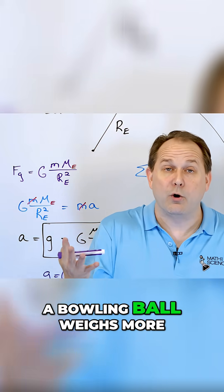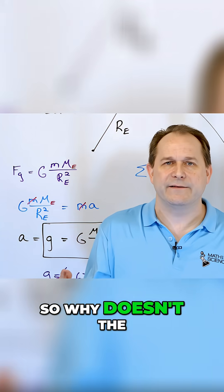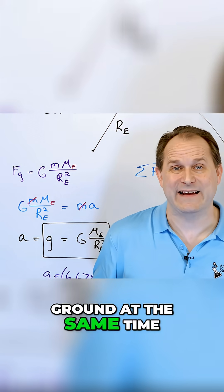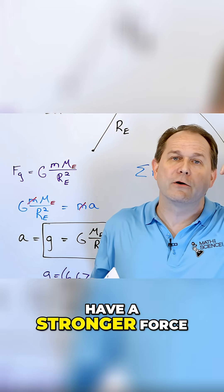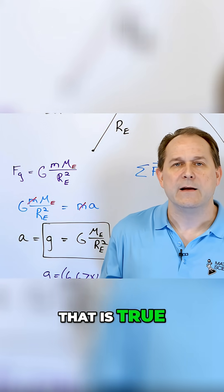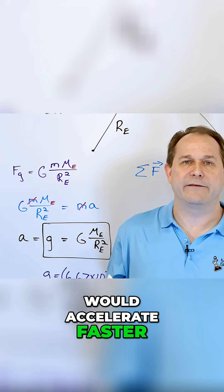And it's true, a bowling ball weighs more. So why doesn't the bowling ball hit the ground at the same time? Yes, it is true that bowling balls have a stronger force of attraction to the earth due to gravity. That is true, and so you would think they would accelerate faster.